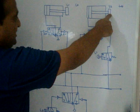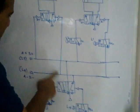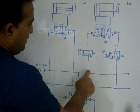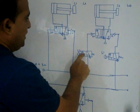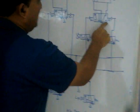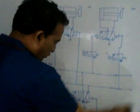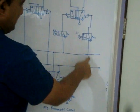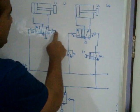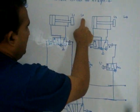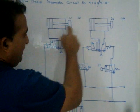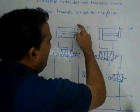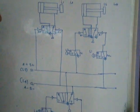Let me quickly explain once again. L3 is active, so S1 turns on and A plus is on — the piston goes to L2. When it reaches L2, B plus actuates and the piston goes to L4. When L4 is reached, S2 turns on and A minus is triggered — the piston goes from L2 to L1. L1 actuates, and B minus follows. This cycle continues automatically for N cycles.